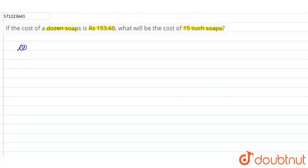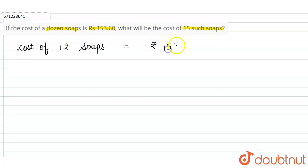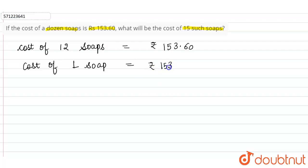Here it is given that cost of a dozen means 12 — in a dozen there are 12 things. So, cost of 12 soaps is Rs. 153.60. Cost of 1 soap will be equals to Rs. 153.60 divided by 12. So, cost of 1 soap will be equals to Rs. 12.80. Now we have to calculate the cost of 15 soaps.